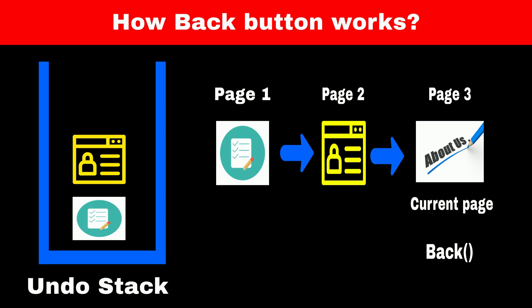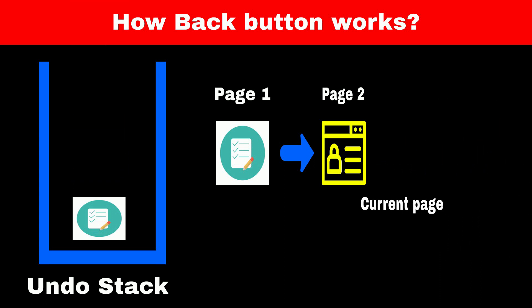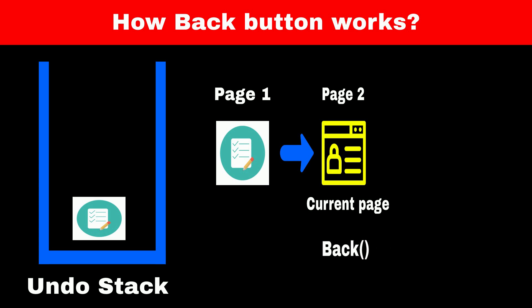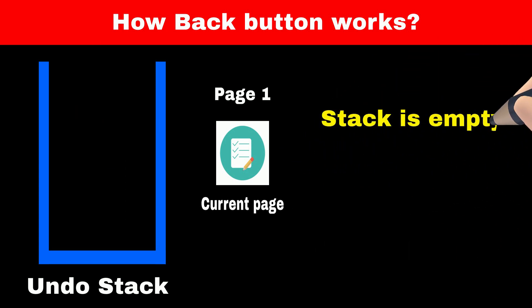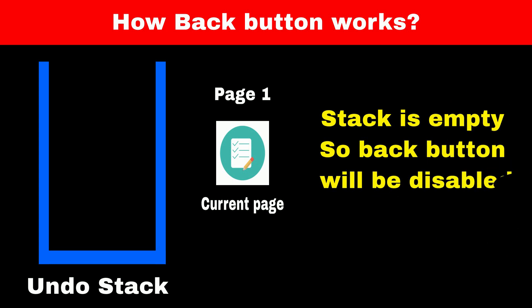If we press the back button on page 3, page 2 is at the top of the stack, so we display and remove page 2 from the stack. Similarly, if we press the back button on page 2, page 1 is at the top of the stack, so we display and remove page 1. Now our stack is empty, so the back button will be disabled.